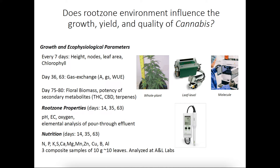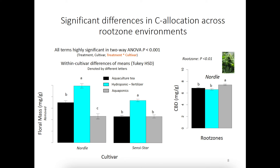Each root zone system was replicated 20 times and completely randomized throughout the experiment. A group of researchers — the botany team — measured growth rates every week, measured leaf-level gas exchange parameters weekly as well, and then harvested the biomass to get quantifiable yield. Secondary metabolites, terpenes and cannabinoids, were sent off for GCMS and UHPLC analysis. We found significant effects of root zone on growth traits, physiological traits, nutrient acquisition, and overall biomass yield.